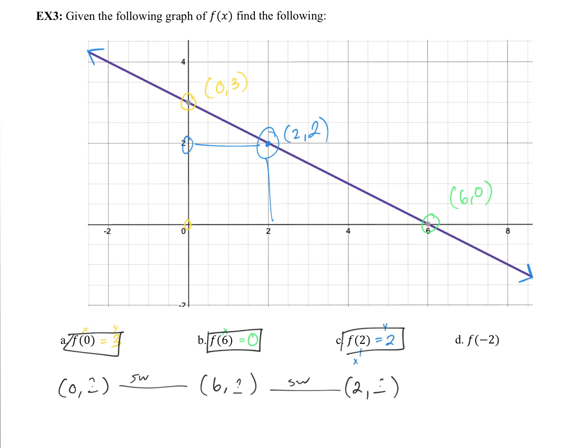And lastly, f of negative 2. So, we're looking for when x is negative 2. When x is negative 2, that's right here. So, up here, negative 2, what? Aha! Negative 2, 4. So, when x is negative 2, the y is going to be 4. And that is that.